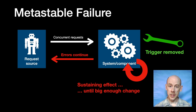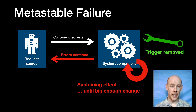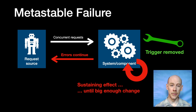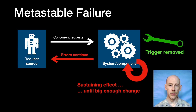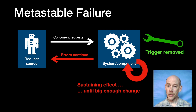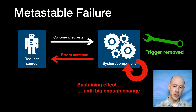This brings us to metastable failures. The transient issue has been resolved, but there's some sort of feedback loop that keeps the system unhealthy. The feedback loop is somewhat stable — strong enough to prevent recovery indefinitely given the current operating environment, but not so stable that it can't be disrupted by dropping the load or some sort of manual intervention. While the feedback loop is in effect, we see the system is in a metastable failure state.